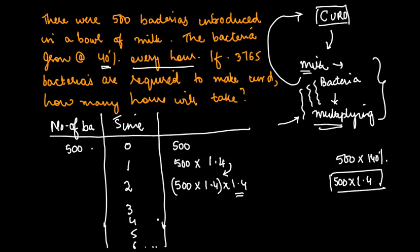You are told that you require 3,765 bacteria to convert the milk into curd. You need to find out at which hour will this happen - will it be the third hour, fourth hour, fifth hour, or sixth hour?